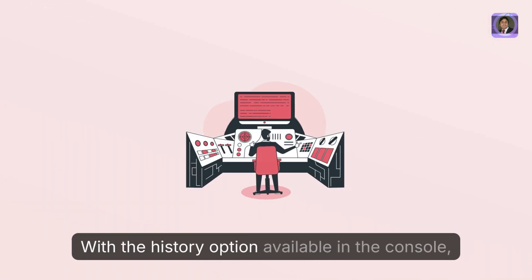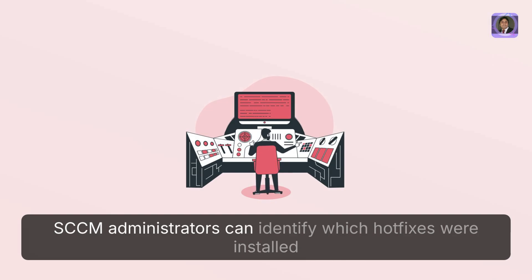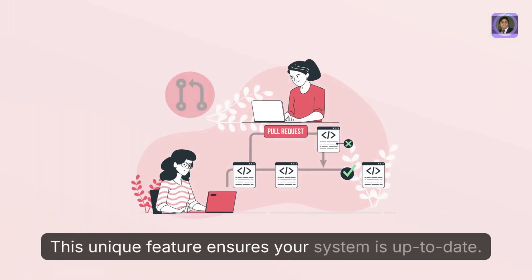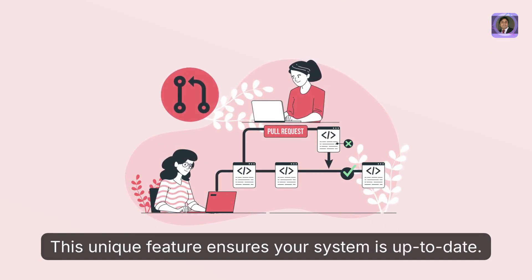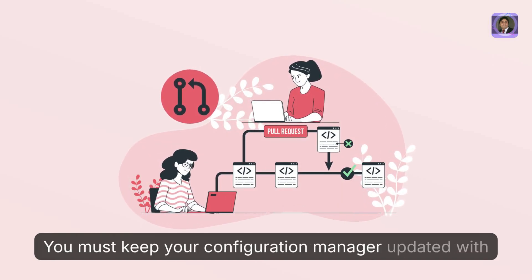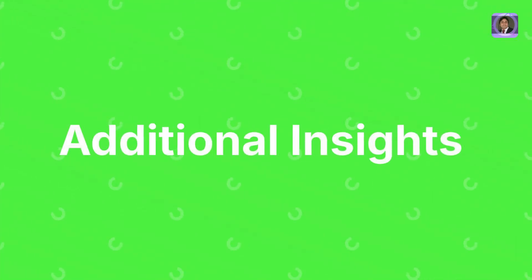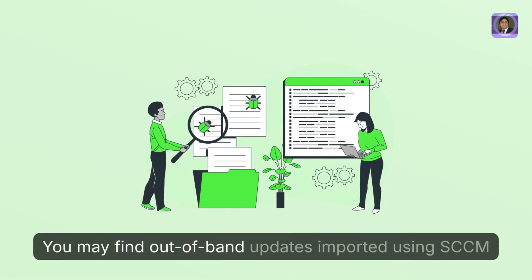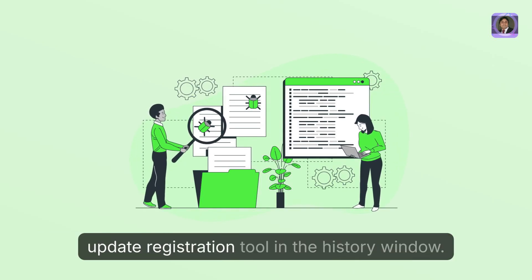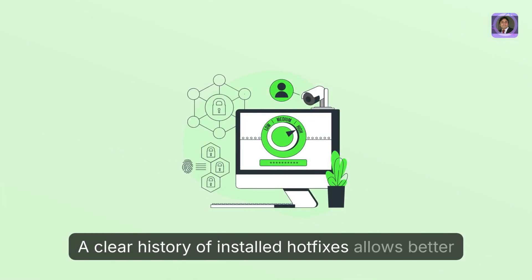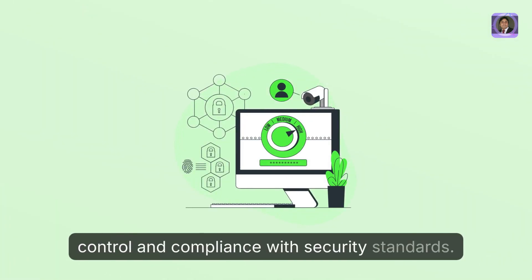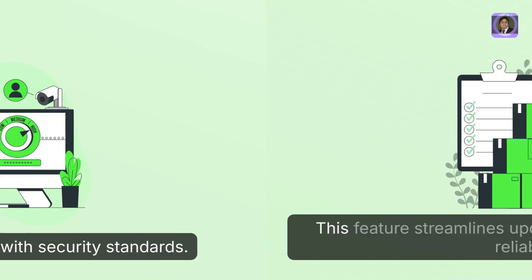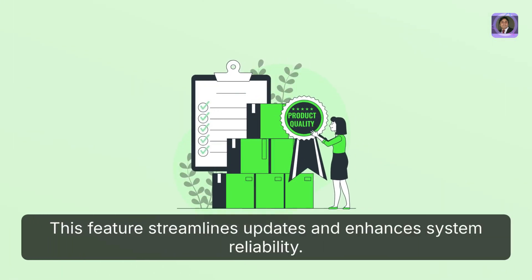With the History option available in the console, SCCM administrators can identify which hotfixes were installed or skipped. This unique feature ensures your system is up-to-date, and you must keep your Configuration Manager updated with the latest hotfixes. You may also find out-of-band updates imported using the SCCM Update Registration tool in the History window. A clear history of installed hotfixes allows better control and compliance with security standards, streamlining updates and enhancing system reliability.